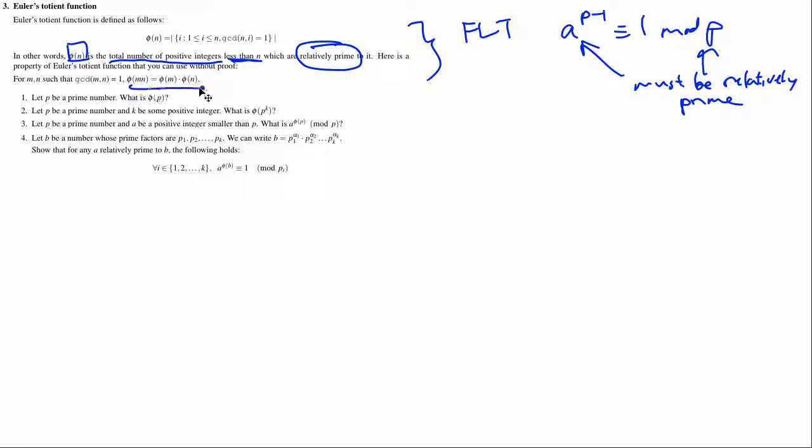Great, and then you're given an additional property if they're relatively prime, which is really helpful. M and n, that is.